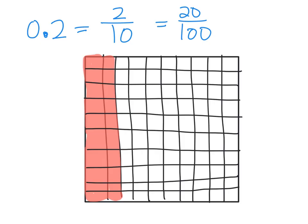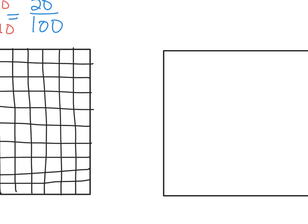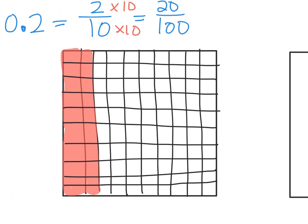What we want students to recognize is: there's a pattern here. Ten times ten is a hundred, and two times ten is twenty. We want students to recognize this formal mathematical equivalence — that two tenths, when you multiply both the numerator and the denominator by ten, you get twenty hundredths. Two tenths is equivalent to twenty hundredths.